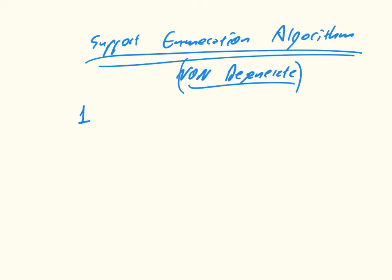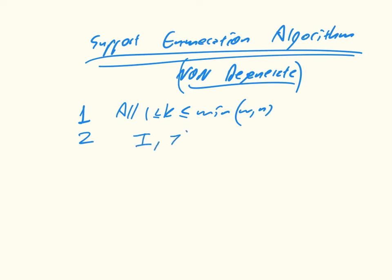Step one is to find all k, where 1 ≤ k ≤ min(m, n), and m and n are the sizes of our two strategy sets. That's just saying find all possible sizes of the supports — all supports of size one, size two, size three. Then in step two, identify all actual supports of those sizes.